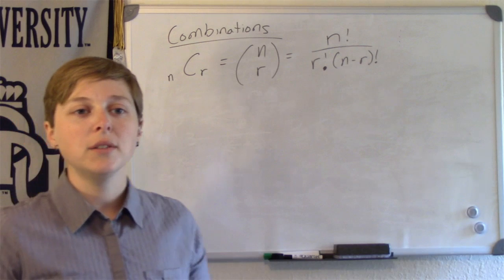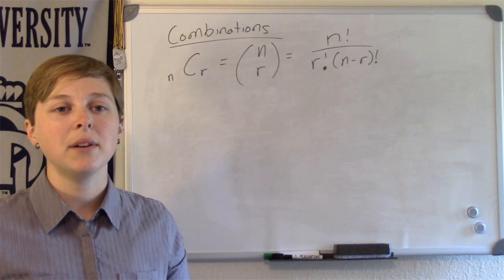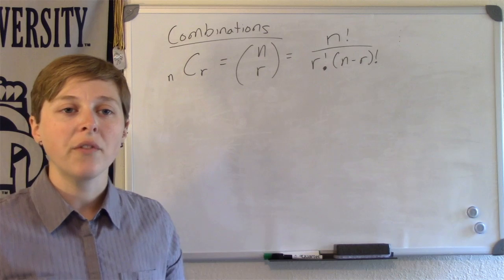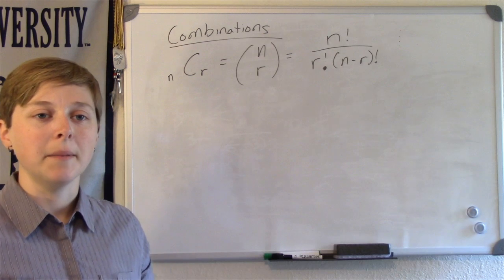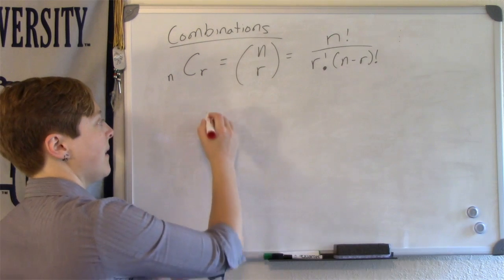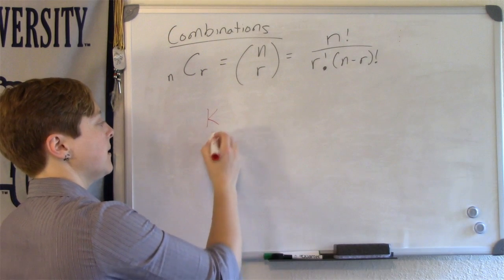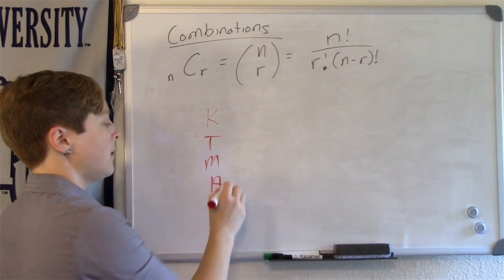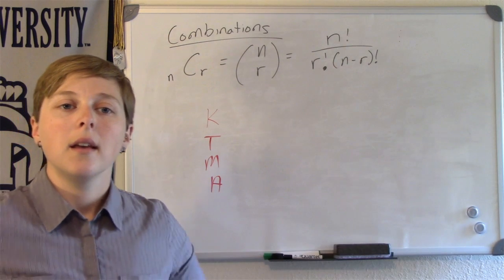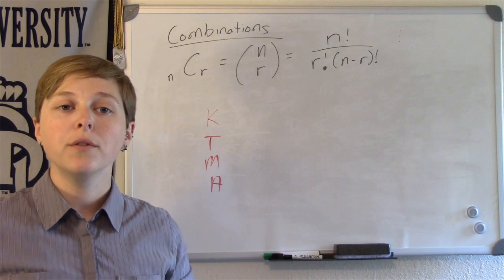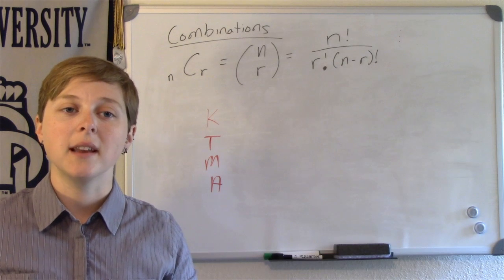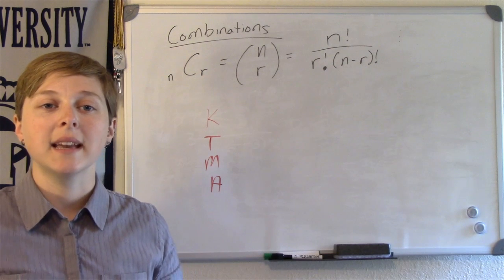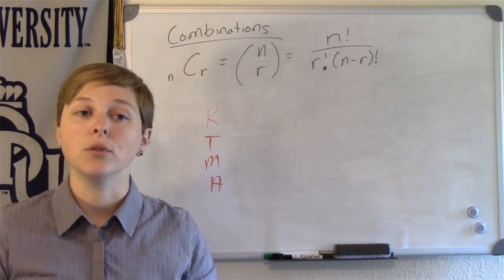Let's use a similar exercise as in my previous video about permutations. I have four friends: Kim, Tina, Max, and Alex. Only two friends can be saved as my favorites in my phone. How many ways can I select two friends?